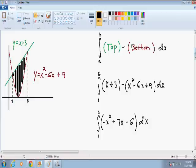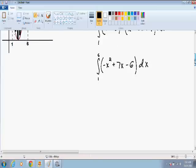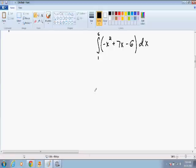So now we just need to calculate this definite integral to finish the problem. If we integrate the function, negative x squared becomes negative x cubed over 3, plus 7x becomes plus 7x squared over 2, and minus 6 becomes minus 6x.